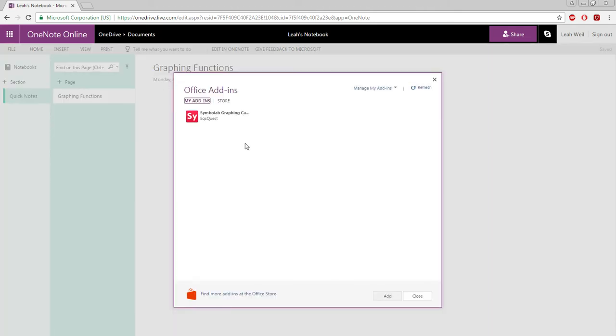This will bring you to my add-ins where you can see I already have the Symbolab graphing calculator. If you don't, go ahead and click Store.